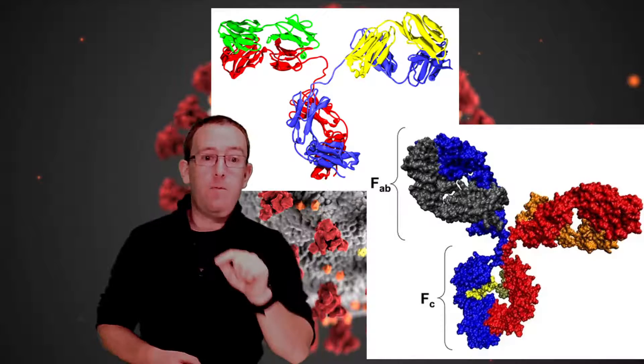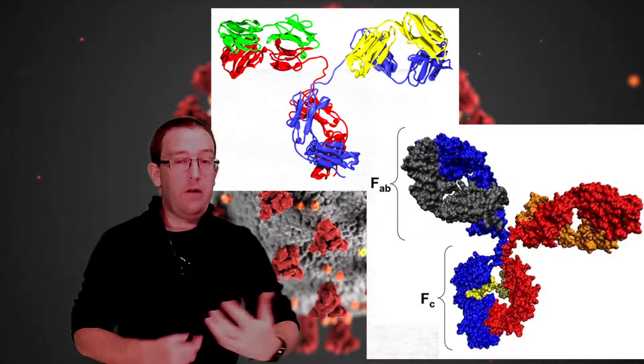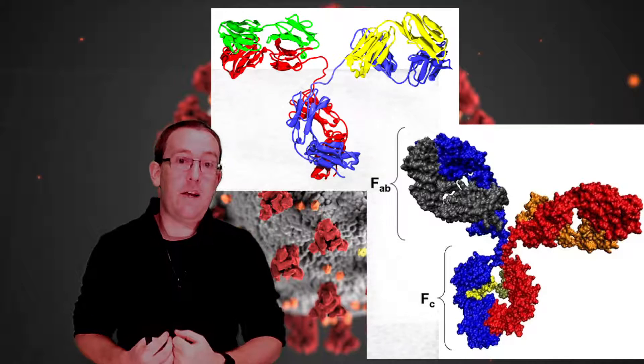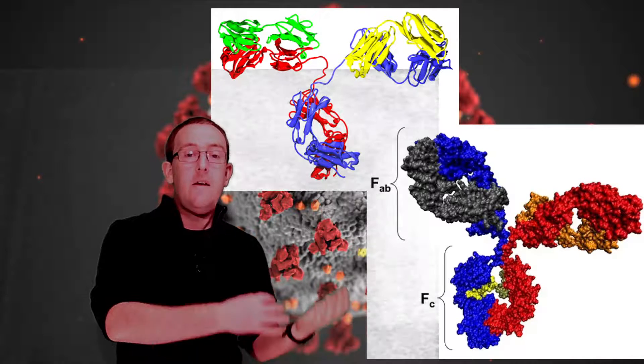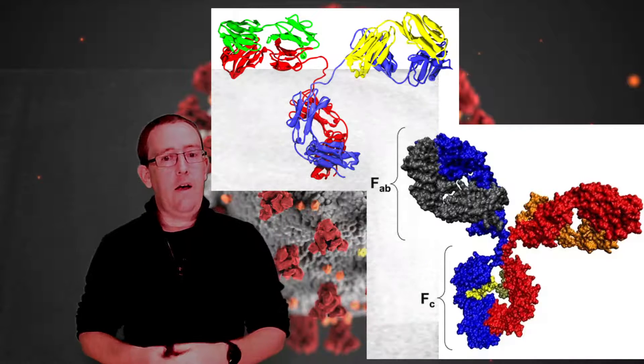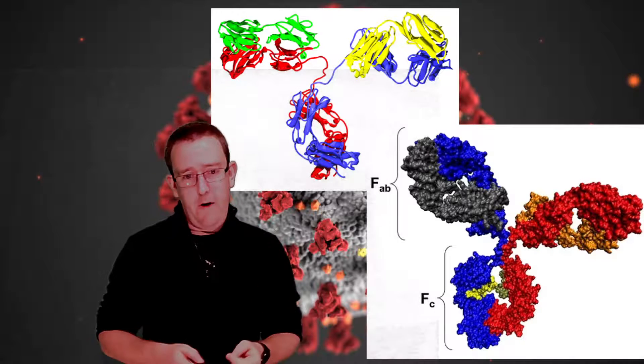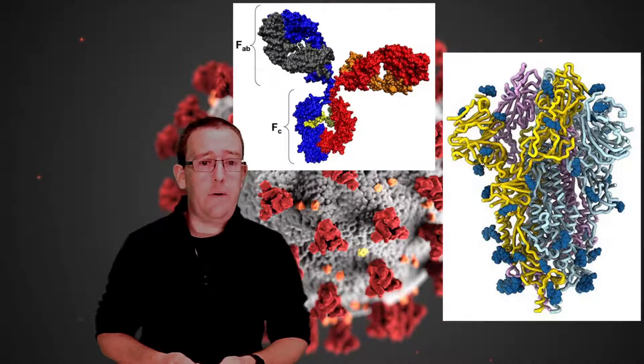That's what would mean our vaccines, which train our immune system to make a certain type of antibody, those antibodies would no longer fit onto the spike protein if it's changed. That's what we're worried about.